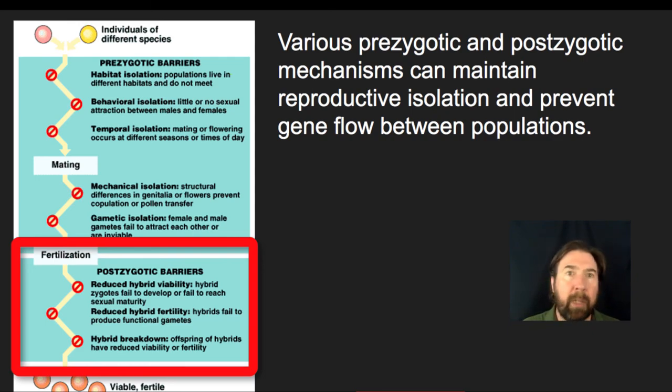We see that with closely related species. So for example, horses and donkeys mate and produce mules, and mules generally will mature, but they are considered infertile. And so that is a post-zygotic barrier. And it's why we consider those two separate species.